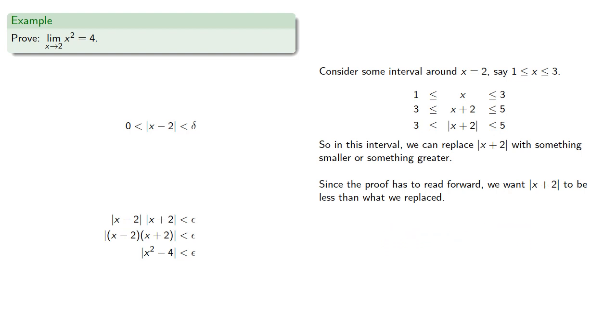So we'll use the upper bound 5 in the previous line. So we assumed x was between 1 and 3. And in this interval, the absolute value of x plus 2 is less than 5.